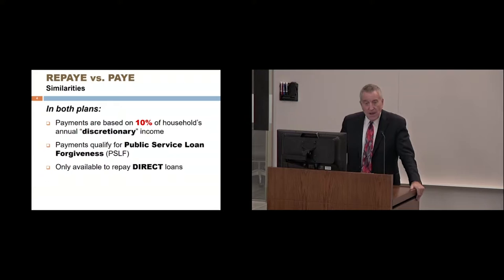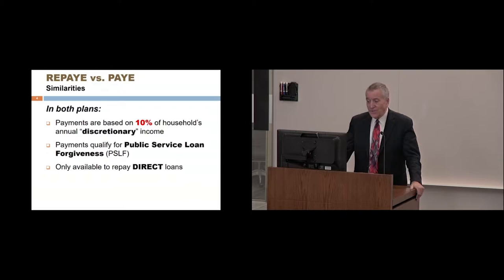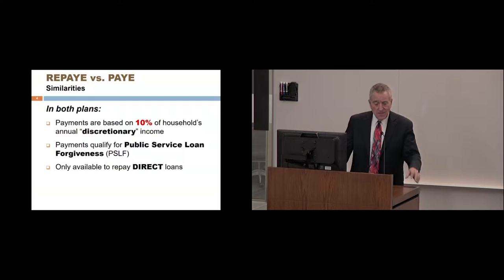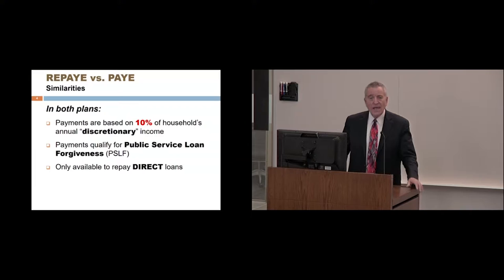What are the similarities between REPAYE and PAYE? In both plans, payments are based upon 10% of your household's annual discretionary income, payments qualify for Public Service Loan Forgiveness (PSLF), and the payments are only available for repaying your federal direct loans — your direct unsubsidized loan, direct subsidized loans, direct Grad Plus loan, and direct consolidation loan.